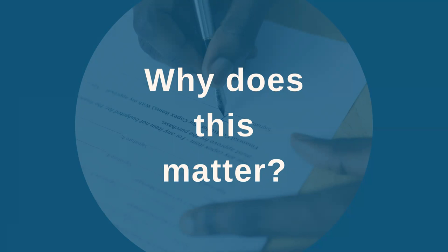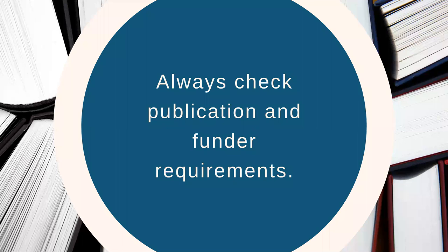Publishers want to protect this investment, which is why they often prohibit sharing the final stylized output which looks like a finished journal article. Instead, many will allow the sharing of the author accepted manuscript. Although this version might not look like a finished article, it has been through peer review and any updates and crucially has exactly the same content as the finished product. As this video shows, identifying and sharing the correct version of a manuscript can sometimes be more complicated than it first appears. You should always check journal and funder requirements carefully to ensure you're sharing the correct version, and ask your librarian if anything is unclear.